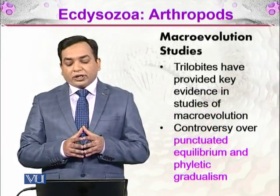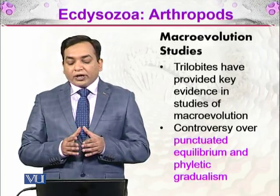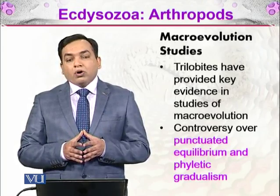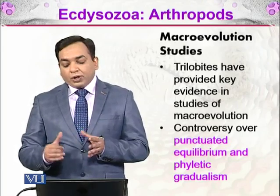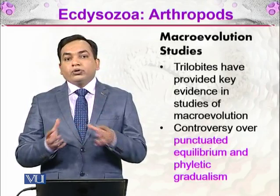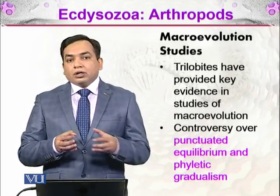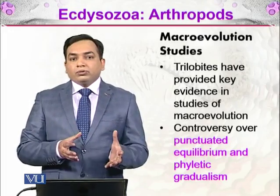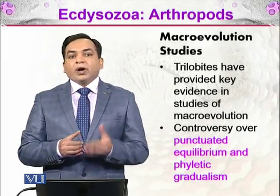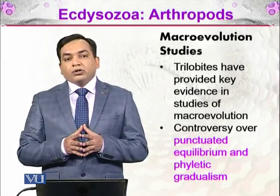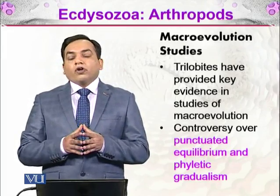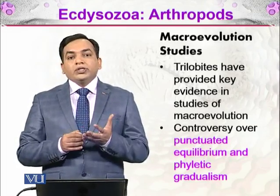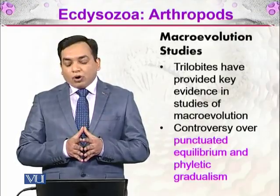Trilobites have provided key evidence in the study of macroevolution. For example, there is a controversy over punctuated equilibrium versus phyletic gradualism — two very different theories of evolution. The fossil record of trilobites is a very good resource to study and evaluate these theories of evolution.